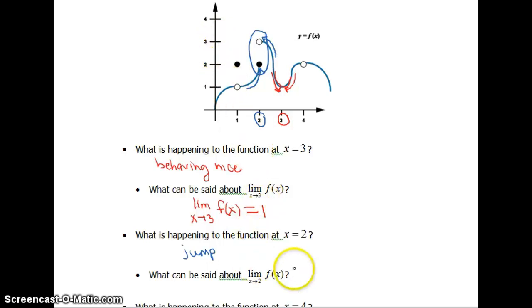Okay, so what can we say about the limit as x approaches 2? It does not exist. I'm gonna underline that 'not' there.